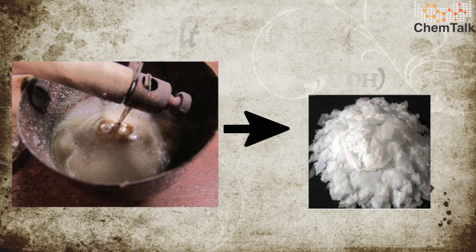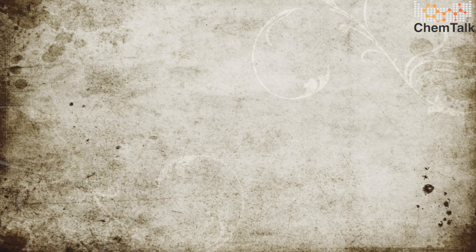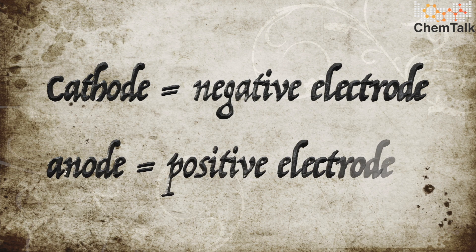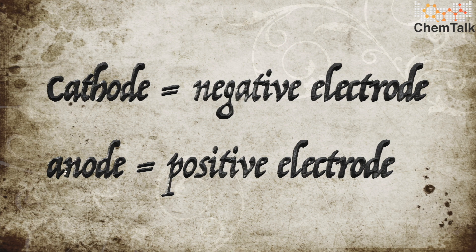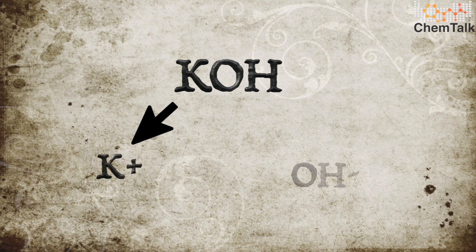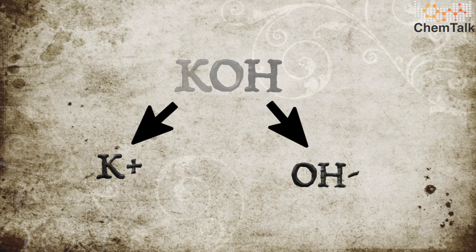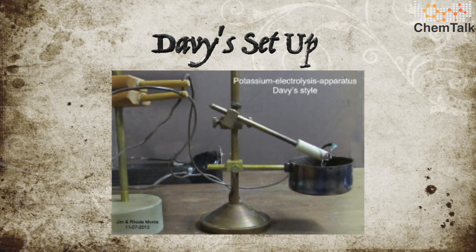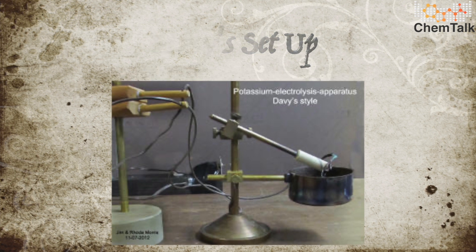By using a negative electrode, or cathode, and a positive electrode, or anode, to direct ion flow, Davy was able to decompose potassium hydroxide into K⁺ and OH⁻. Consequently, potassium owes its name to Davy's successful isolation of the metal from caustic potash.